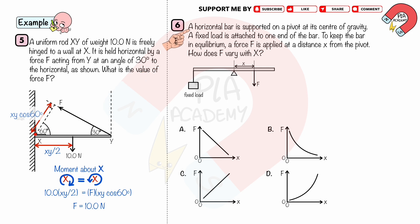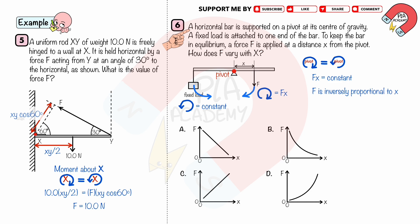Work Example 6: A horizontal bar is supported on a pivot at its center of gravity. A fixed load is attached to one end. To keep the bar in equilibrium, a force F is applied at a distance X from the pivot. The weight of the fixed load creates a constant anticlockwise moment. Applying the principle of moments: F × X equals a constant. This shows that F is inversely proportional to X, creating a reciprocal graph. So B is correct.